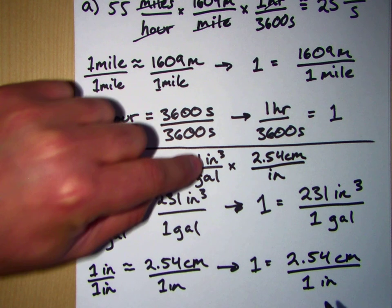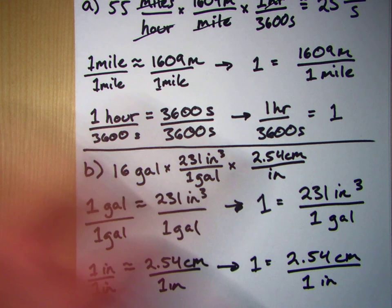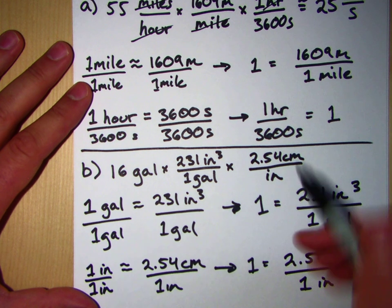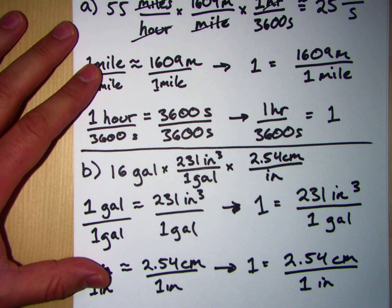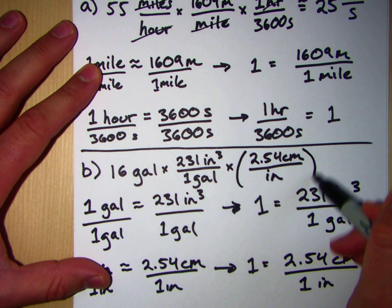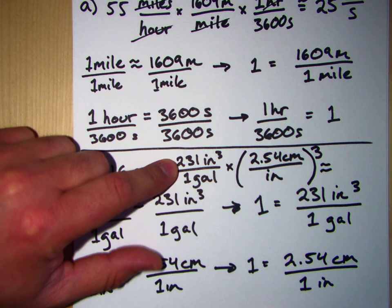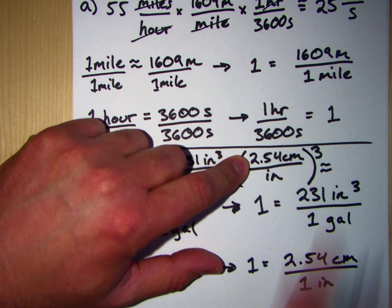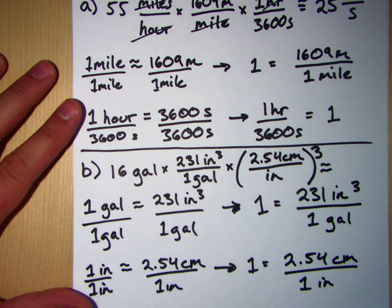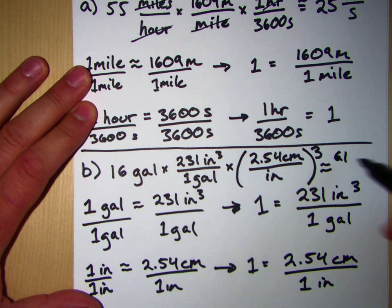That's not going to cut it because we've got three units of inch upstairs and only one unit of inch downstairs. So for this to work, what we need to do is we need to take this value of one right here and cube it. The good news is one cubed is still one, so we're not changing the value of anything if we just do that. Now we can do our arithmetic. So what I've got is 16 times 231 times 2.54 times 2.54 times 2.54 is about equal to 6.1 times 10 to the 4th.